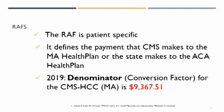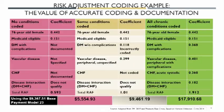The risk adjustment factor — the RAF — is patient specific. It defines the payment that CMS is going to make to the Medicare Advantage plan, or the state will be making to the ACA Affordable Care Act plan. There is a denominator — I don't know why they call it the denominator, because it's a multiplier — but it's CMS. This is your conversion factor, and for Model 23 it's 9367.